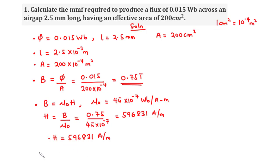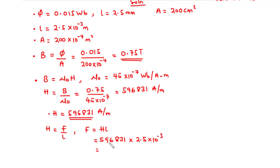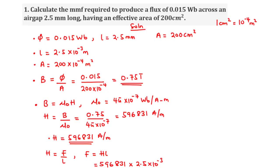Since we have the value of H, using the relation H = F/L, we can find the MMF. So F, the magnetomotive force, equals the magnetic field intensity times the length of the air gap: 596,831 times 2.5 times 10 exponent negative 3, which gives 1492 amperes. That is the magnetomotive force across an air gap of 2.5 mm long.